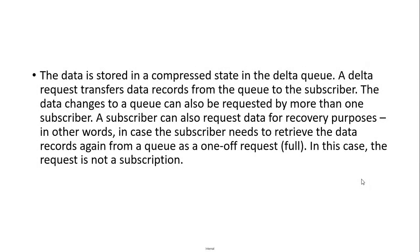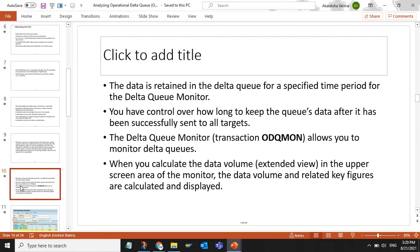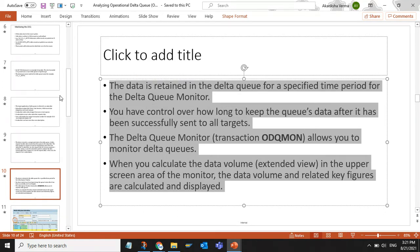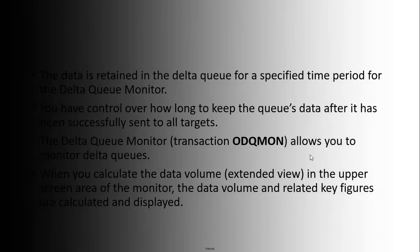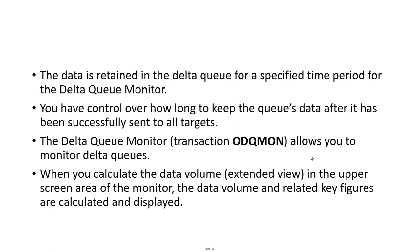The data is stored in a compressed state in the delta queue. A delta request transfers data records from the queue to the subscriber. The data changes to a queue can also be requested by more than one subscriber. A subscriber can also request data for recovery purposes — in other words, in case the subscriber needs to retrieve the data records again from a queue as a one-off request, full. In this case, the request is not a subscription.